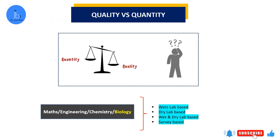I want to emphasize one thing: quality and quantity both matter a lot. Many young students think they require a large number of papers in terms of quantity. But in the scientific community, quality of your publication — whether it's a proceeding, abstract, or research article — matters a lot. Comparing subjects, in engineering and chemistry the number of publications is a bit higher than in basic biology or biotechnology, where wet lab and dry lab experiments vary things further.